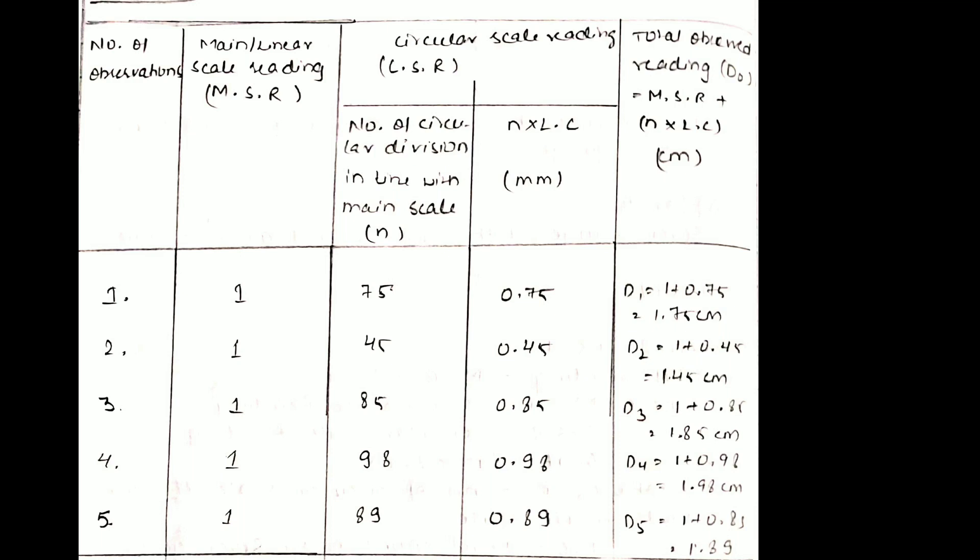The MSR or main scale reading always remains constant. I took the reading five times because I consider it an ideal number. Then I measured n, that is the number of circular divisions in line with the main scale. Here I got the answers 75, 45, 85, 98, and 89.